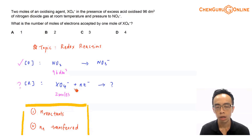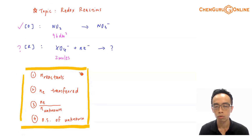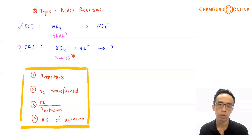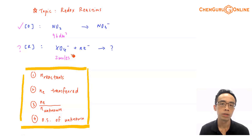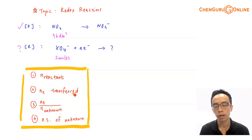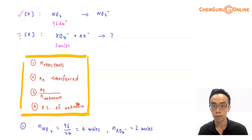For this type of question, the recommendation is to use these 4 steps to determine the oxidation state for X in the product — particularly useful when given experimental data. In this question we are given the volume of NO2 and the amount of XO4⁻; sometimes a titration is used instead. Step 1: determine the number of moles of reactant. Step 2: determine the number of moles of electron transferred using the known half equation. Step 3: determine the mole ratio for electron to unknown species. Step 4 (if required): determine the oxidation state for the unknown species.